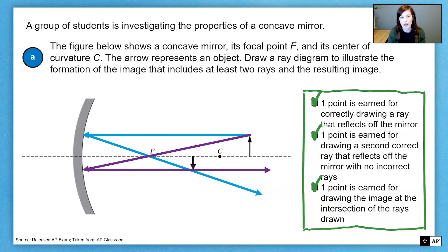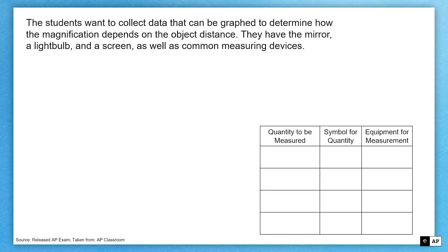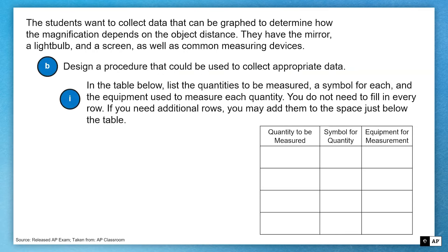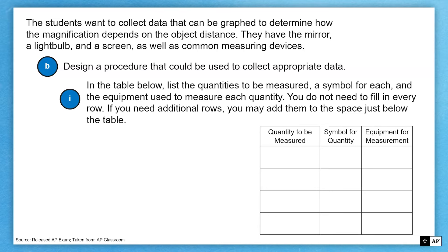Now we're going to get into the experimental design part. These students want to collect data that can be graphed to determine how the magnification depends on the object distance. They have a mirror, a light bulb, a screen, and some other common physics equipment. Part B asks us to design a procedure to collect the appropriate data. Before answering part I, let's preview the next parts: we want magnification and object distance.